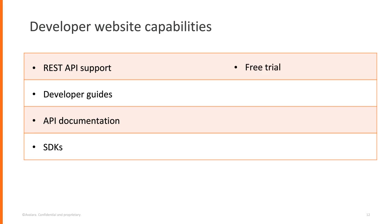Number five is Free Trial. You can sign up for a free trial that gives you access to our sandbox environment where you can do everything as if you're building on production — set up company profiles, jurisdictions, and see how the tax calculation comes back. Pretty much every single feature we support for tax compliance is available in the free trial. Number six is Community — one of the biggest things for a developer is getting support when you have questions. We have a community of both internal and external Avalara developers that can help answer your questions around integration.